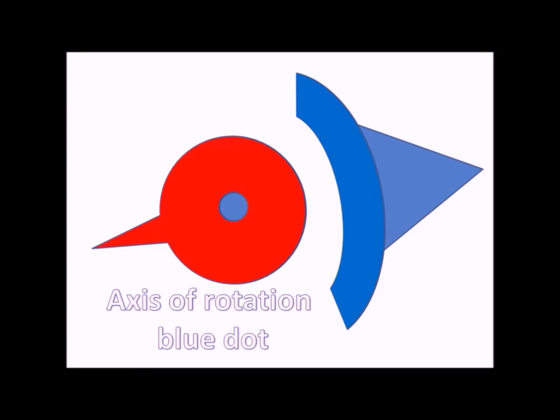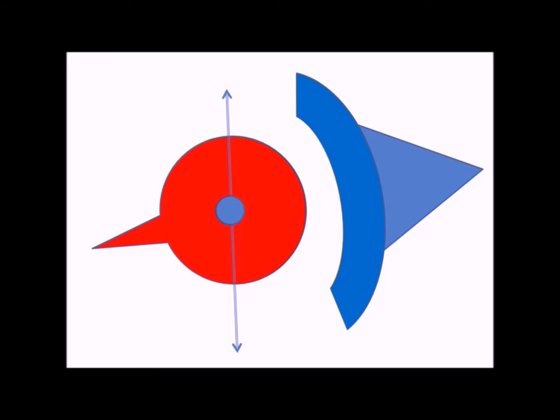Whereas in a concave bone, such as the acetabulum, the axis is inside the other bone. So that sort of explains how things work.